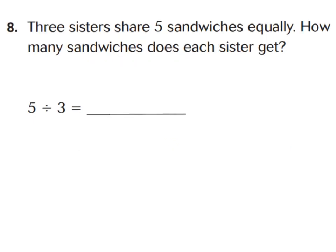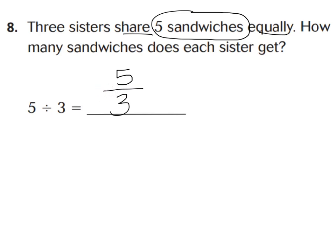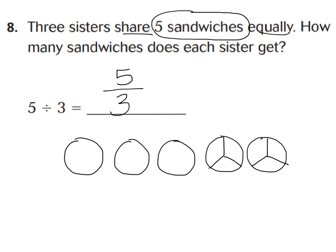For number eight, three sisters share five sandwiches equally — I see 'share' and 'equally.' There are three sisters sharing five sandwiches, so five is the dividend. Our equation is five divided by three, written as the fraction five-thirds. This fraction bar means divided by. Each sister gets five-thirds of a sandwich. Since that's improper, let's change it to a mixed number: five divided by three equals one whole and two-thirds.